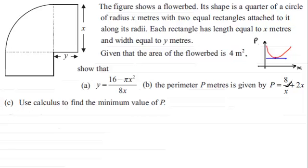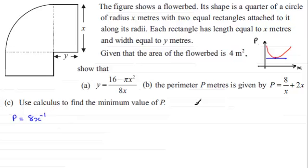We need to differentiate p with respect to x. I noticed that the term 8 over x isn't in a suitable form, so we write it as 8x to the power minus 1. Remember x to the power minus 1 is 1 over x. Then we've got the plus 2x.